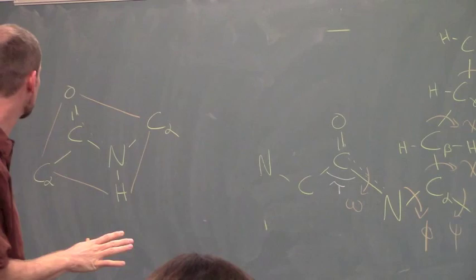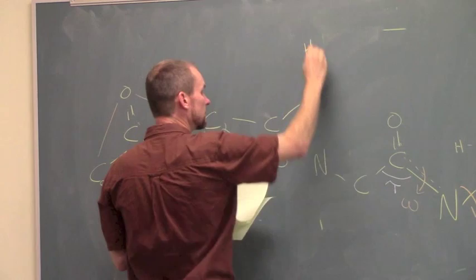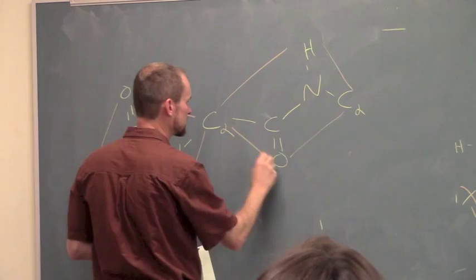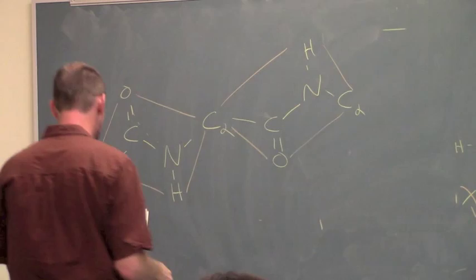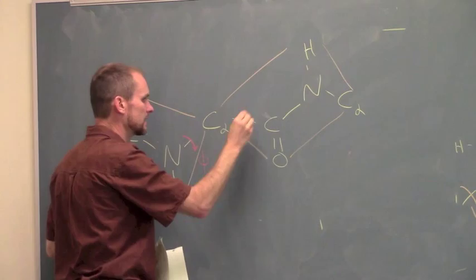Because of this bond, these all become planar. We end up having this set of atoms all in one plane. That C alpha connects to the next CO, which connects to the next N, H, and the next C alpha. These atoms all end up in the same plane.